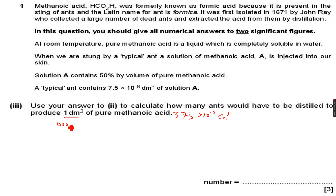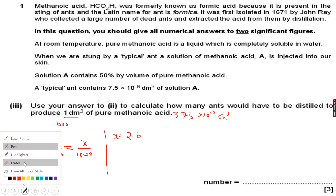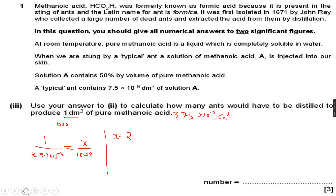We know that one ant gives us 3.75×10⁻³ centimeter cube, so x number of ants will give us 1000 centimeter cube. When I calculate x, it turns out to be — correcting myself — 2.7×10⁴, correct to two significant figures.